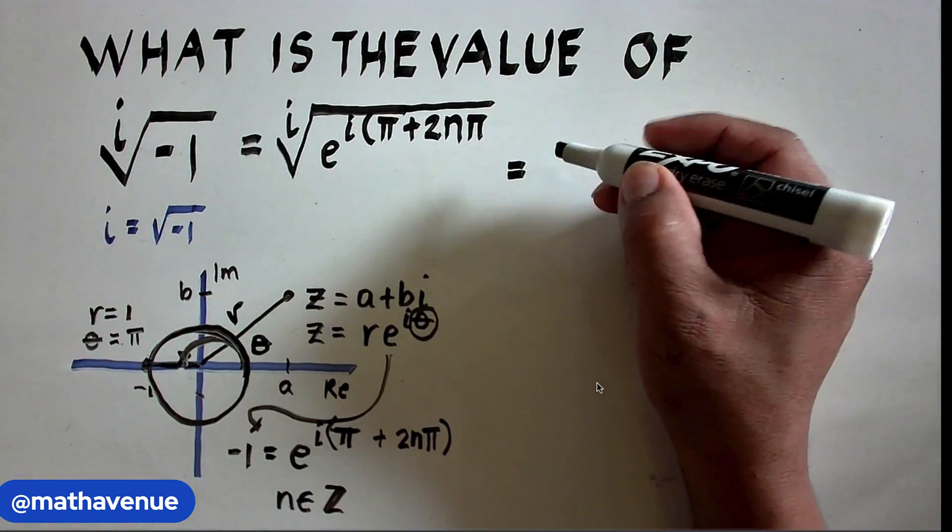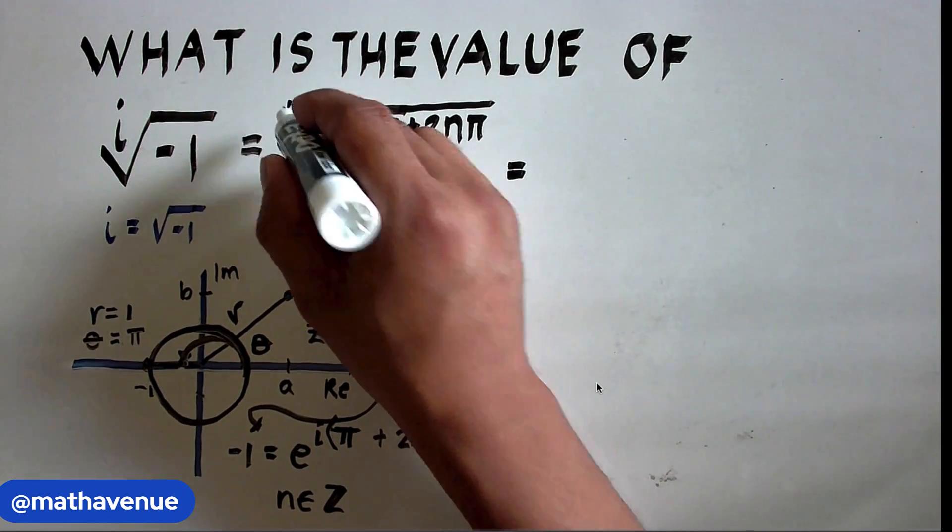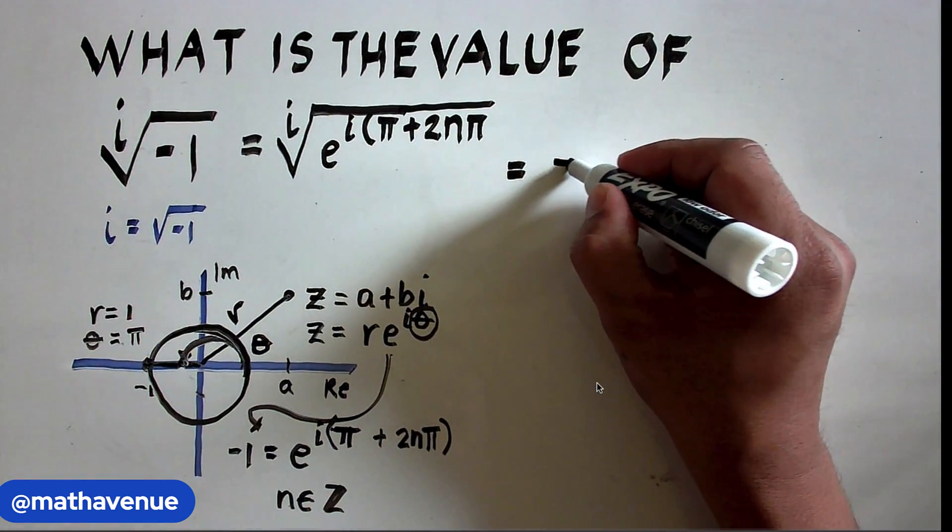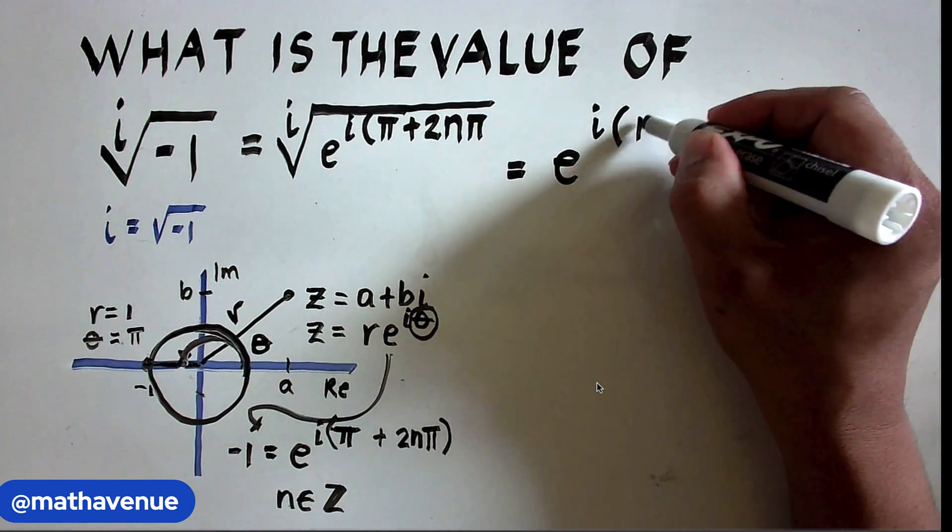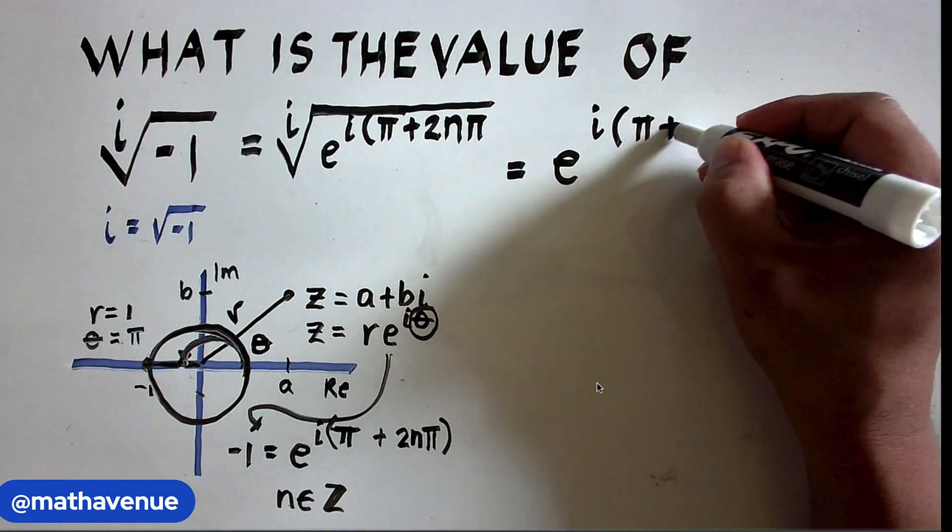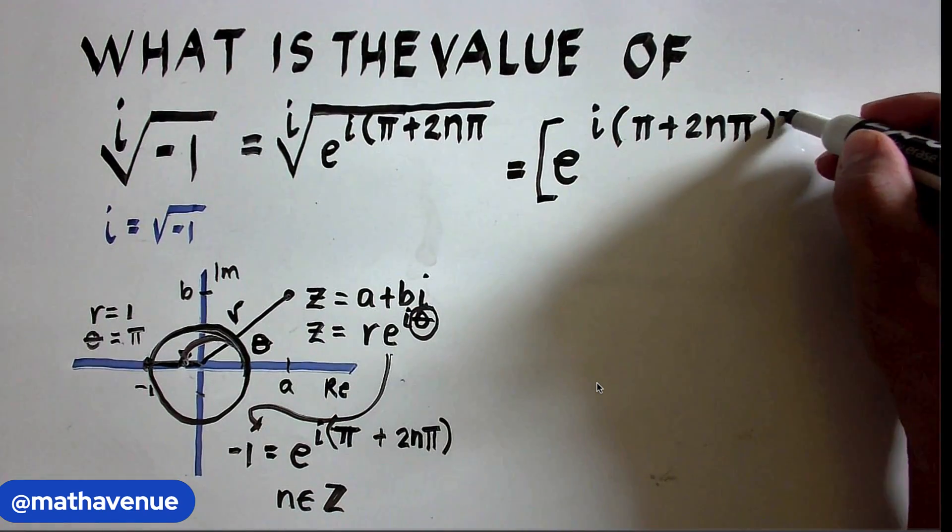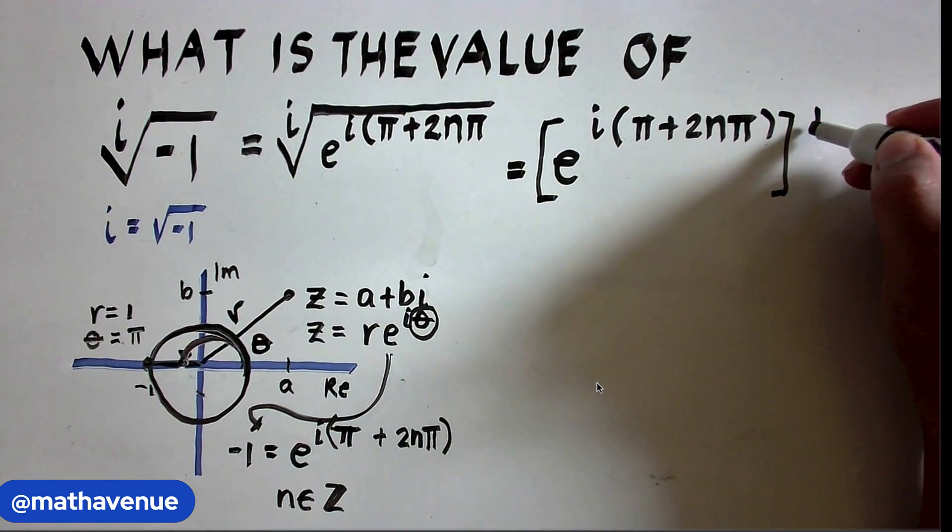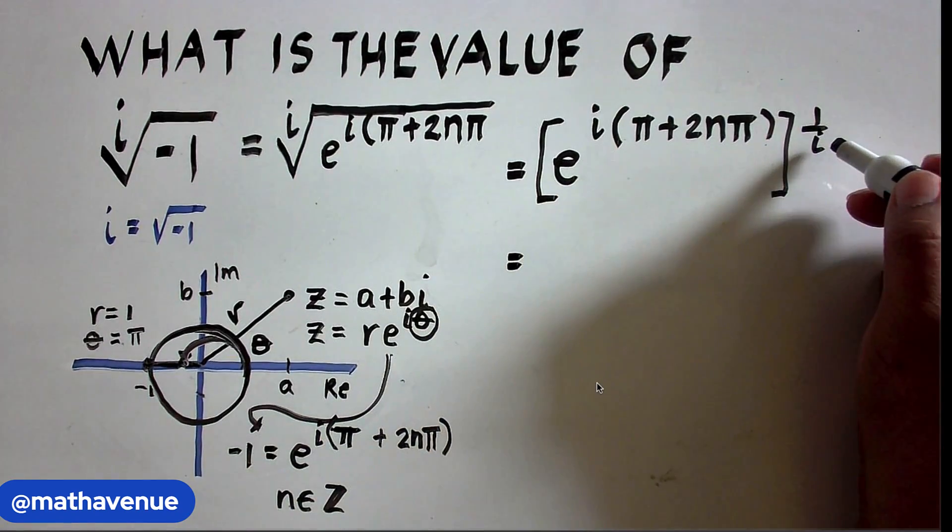This is equal to the base raised to the fractional exponent 1 over i. So, we now write this as e^(i(π + 2nπ)) all raised to the fractional exponent 1 over i.